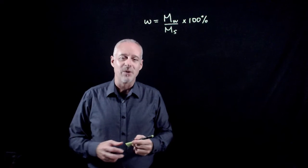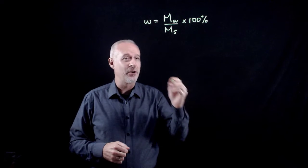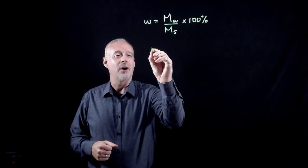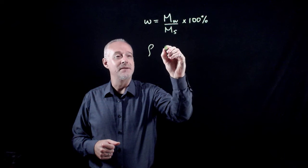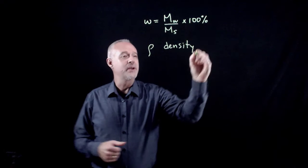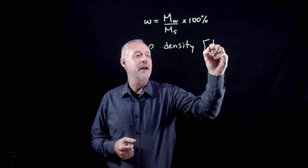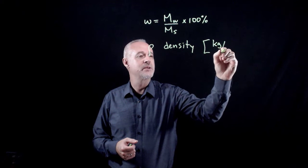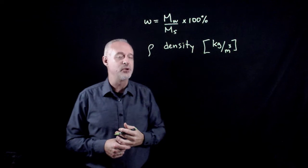In geotechnical engineering and soil mechanics, we often use the Greek letter rho to represent density, and it will be expressed most often as kilograms per cubic meter. That's the units we'll use for density.